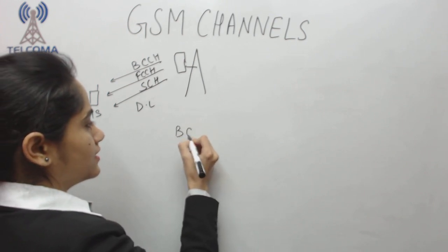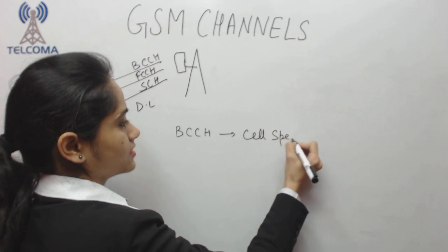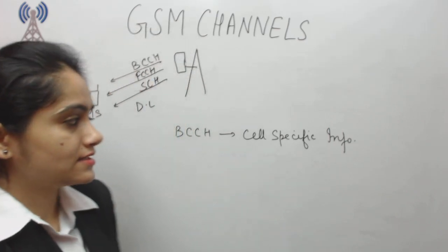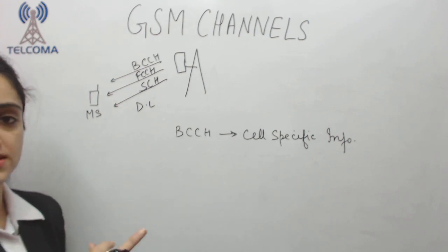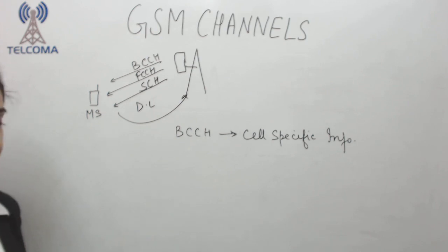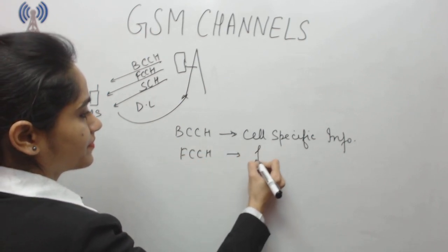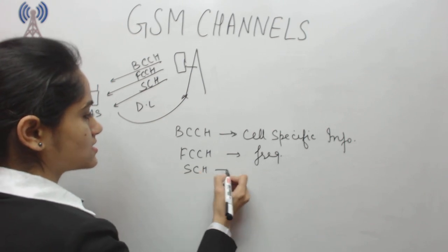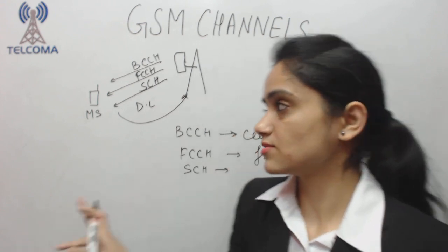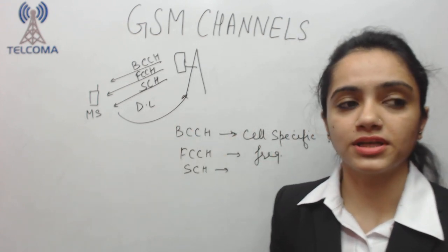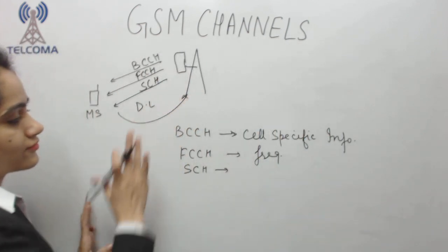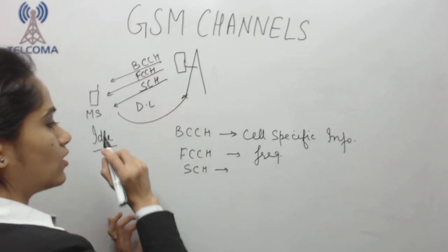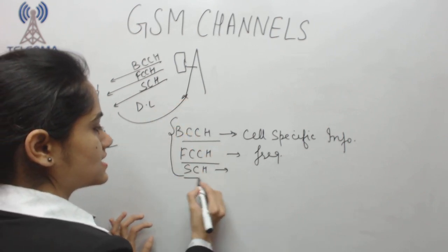BCCH, which is the Broadcast Control Channel, radiates cell-specific information such as the cell ID, so that the mobile station knows which cell it is latched to. FCCH radiates the frequency which the mobile station has to latch onto. SCH, the Synchronization Channel, is there to time-synchronize the mobile station with the network — that is why we have automatic time updates on our phones. When the mobile station is in idle mode, it will always have access to these three channels: BCCH, FCCH, and SCH.